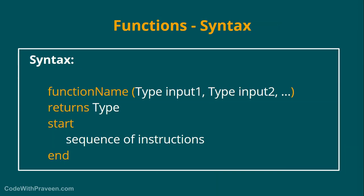Now let us check the syntax of a function. It starts with the function name, followed by open parenthesis, and then we have various input parameters. It can have any number of arguments depending upon your implementation. In this syntax I have mentioned two input arguments, input1 and input2, and I have mentioned type to be generic — this is the variable name and this is the type of the variable.